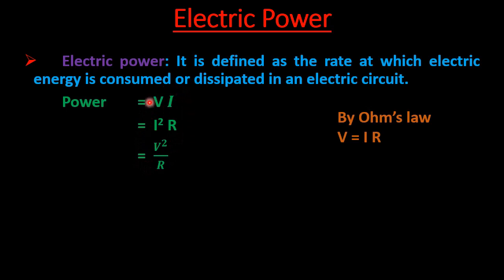When solving numerical problems: if current and potential difference are given, use P = VI directly. If current and resistance are given, use P = I²R. If voltage and resistance are given, use P = V²/R to calculate electric power.